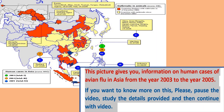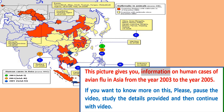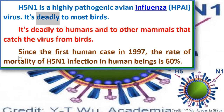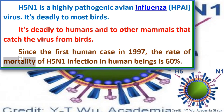This picture gives you information on human cases of avian flu in Asia from the year 2003 to the year 2005. If you want to know more, please pause the video, study the details provided, and then continue. H5N1 is a highly pathogenic avian influenza (HPAI) virus — it is deadly to most birds, deadly to humans, and to other mammals that catch the virus from birds. Since the first human case in 1997, the mortality rate of H5N1 infection in human beings is 60 percent.